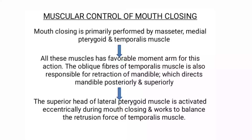Mouth closing is primarily performed by the masseter, medial pterygoid, and temporalis muscles. All these muscles have a favorable moment arm for this action. The oblique fibers of the temporalis muscle are also responsible for the retraction of the mandible, which directs the mandible posteriorly and superiorly. The superior head of the lateral pterygoid muscle is activated eccentrically during mouth closing and works to balance the retrusion force of the temporalis muscle.